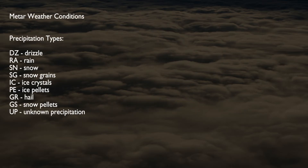After the visibility, weather conditions are coded using their contractions. The weather conditions include types of precipitation and obscurations. Types of precipitation include drizzle, rain, snow, snow grains, ice crystals, ice pellets, hail, snow pellets, and unknown precipitation.